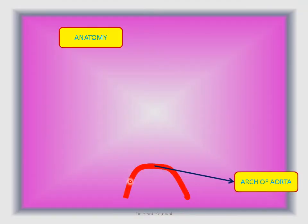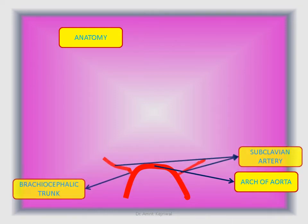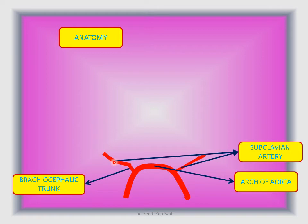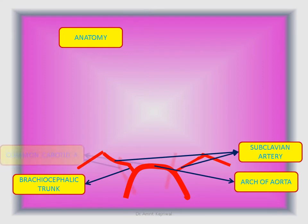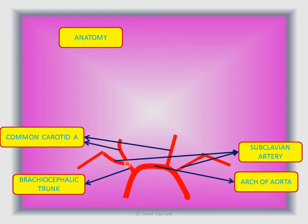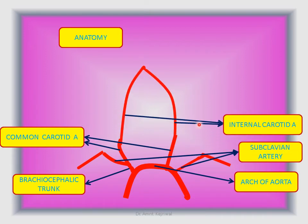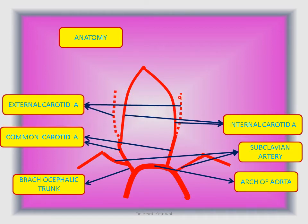Coming to the anatomy diagram. Here you can see the arch of the aorta. This is the brachiocephalic trunk, and this is the subclavian artery originating from the brachiocephalic trunk on the right side. The left subclavian artery originates from the arch of the aorta. These two are the common carotid arteries — the right side is a branch of the brachiocephalic trunk and the left originates directly from the arch of the aorta. These are the two internal carotid arteries. The dotted lines are the external carotid arteries, which we will not be concerned with much in this discussion.